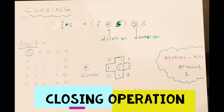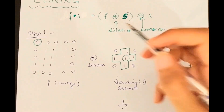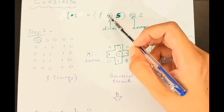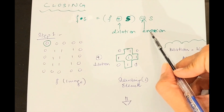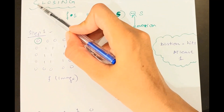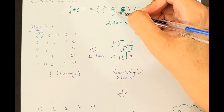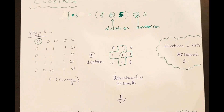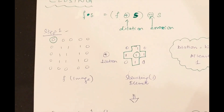The closing operation is represented by an equation where the dot symbol means filled up. If image f is dilated with structuring element s and after dilation you perform erosion, this complete operation is called closing. To remember the order, closing starts with C and dilation starts with D — C and D are adjacent in the alphabet. So whenever doing closing, first perform dilation and afterwards perform erosion.